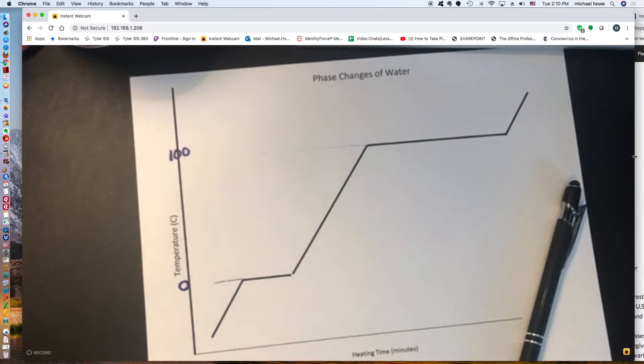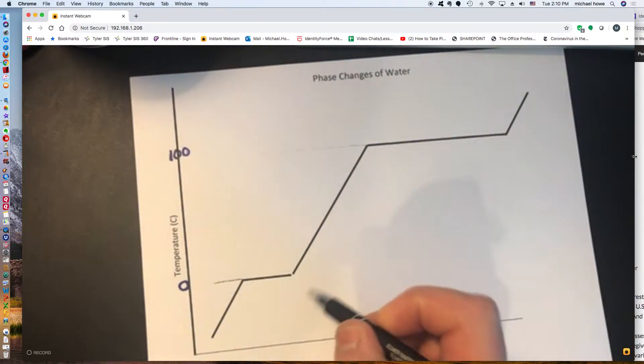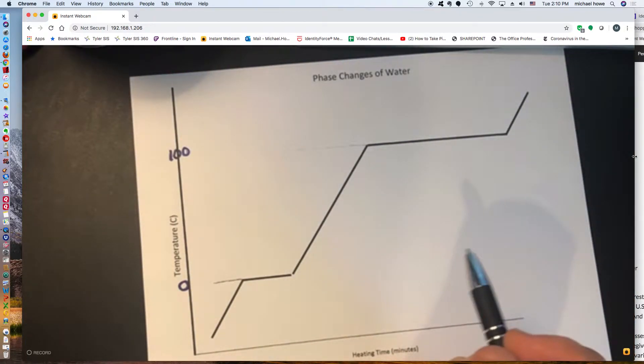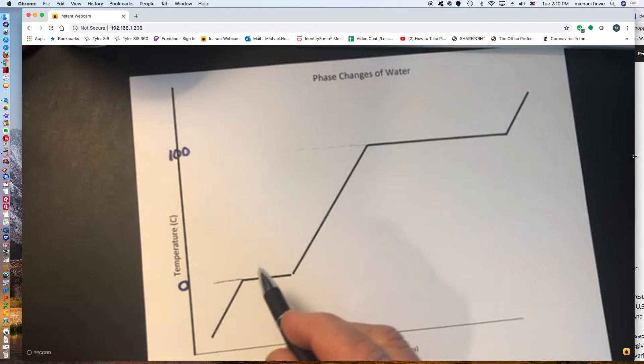I would like to tie this graph into the video that I previously showed you on the website. You'll remember that there was a pan with ice in it, and the ice at the beginning of the experiment was zero degrees C. So that means the ice was here.